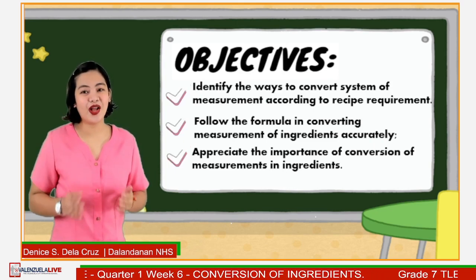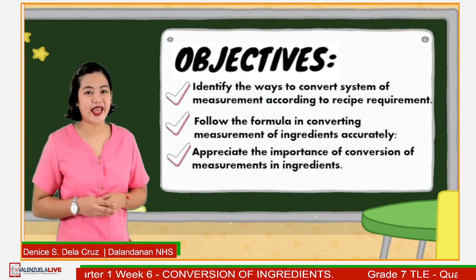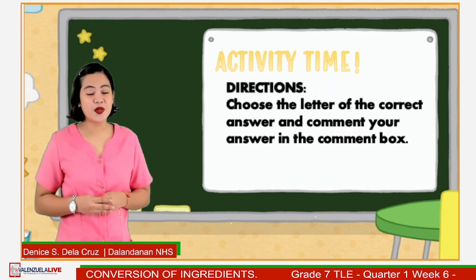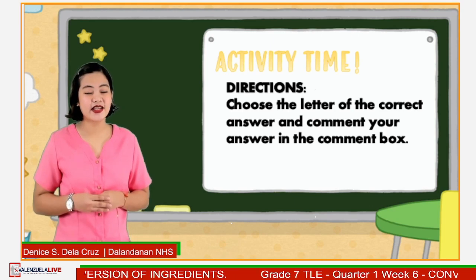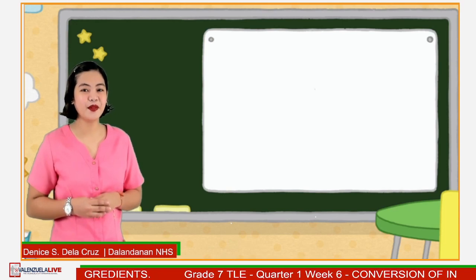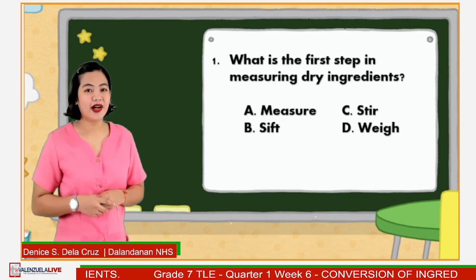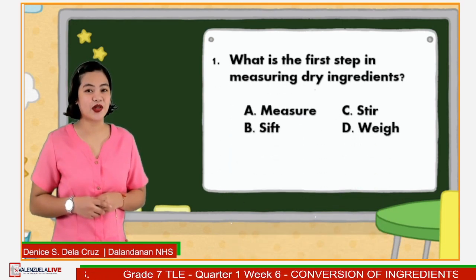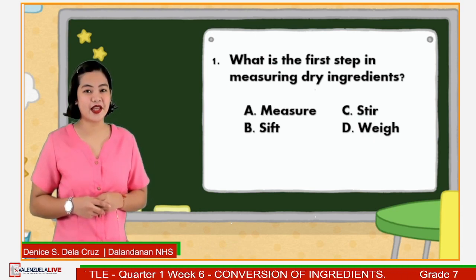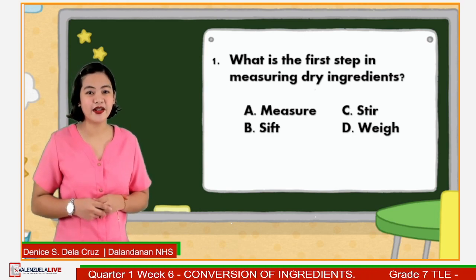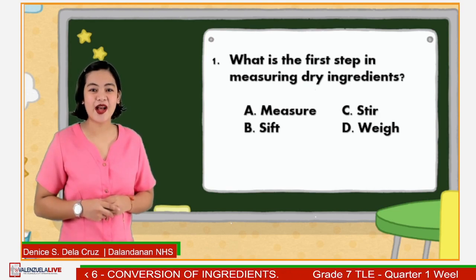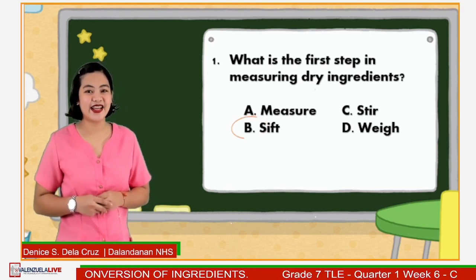I know that you are all excited for our lesson for today. Let us begin by answering this activity. Choose the letter of the correct answer and comment your answer in the comment box. Number 1: What is the first step in measuring dry ingredients? Great job! The answer is letter B.